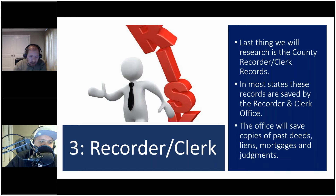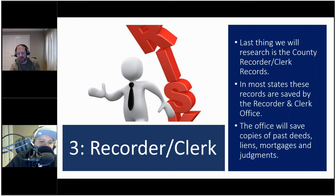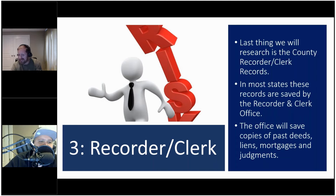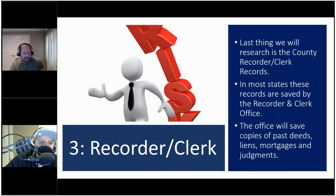The third kind of record is the recorder or clerk's records, sometimes referred to as official records or legal records. This tends to be the last thing we search, because it's after we've already determined that the property can work and the numbers are there. It's where we check for additional risks — liens attached to the property, mortgages, judgments. We dig into the deeds and the ownership history of the property itself to see exactly how it got to where it is.